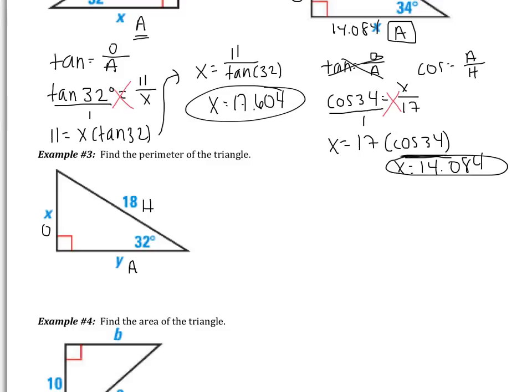It says find the perimeter. You need to find both the x and the y. So you're going to have to set up two separate ratios. One for the x and one for the y. And then find the perimeter. So pause the video right now. Good luck.